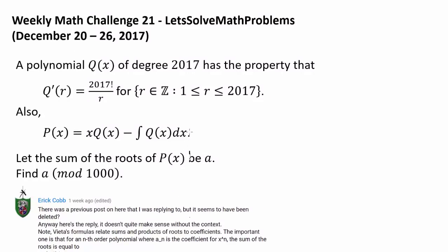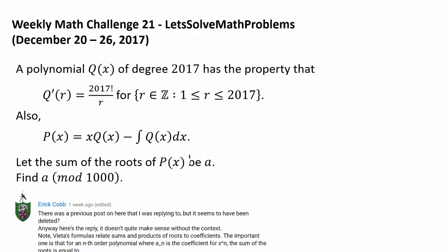It's time to go over the solution to this question. The question is: a polynomial Q(x) of degree 2017 has the property that Q'(r) is equal to 2017 factorial over r, for all integers r such that r is between 1 and 2017 inclusive. That's telling us for r equals 1, 2, 3, 4, all the way to 2017, Q' of that value equals 2017 factorial divided by r.